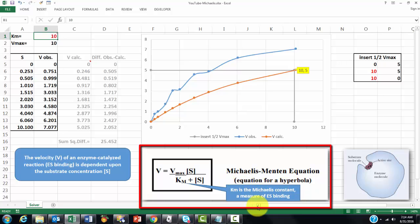It's a hyperbola kind of equation. Km is the Michaelis constant, a measure of enzyme-substrate binding.